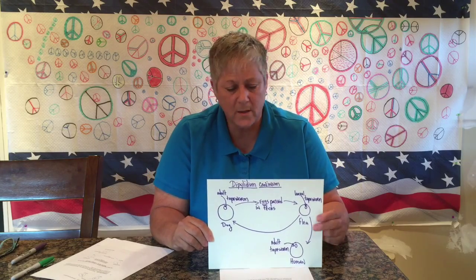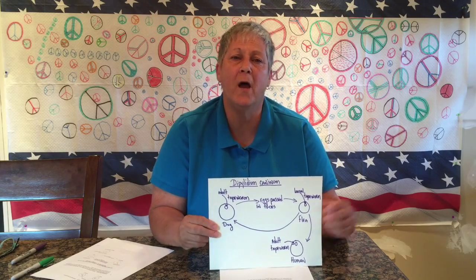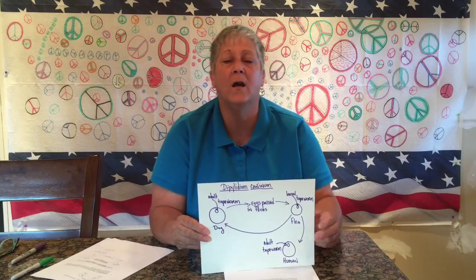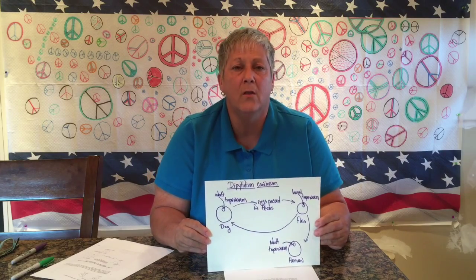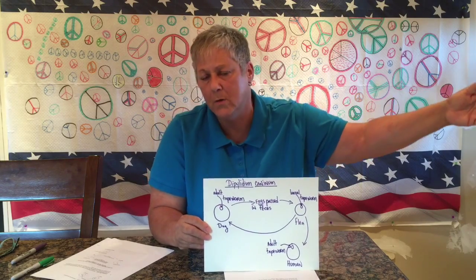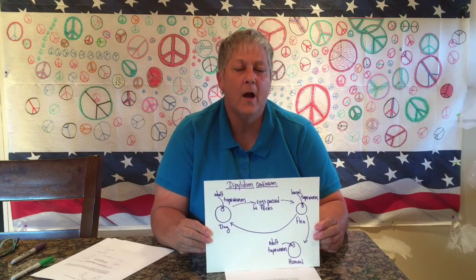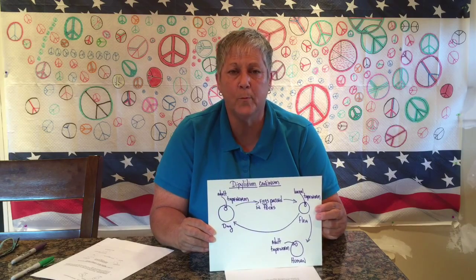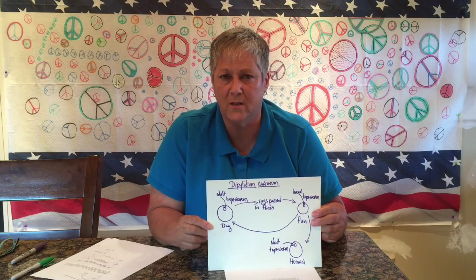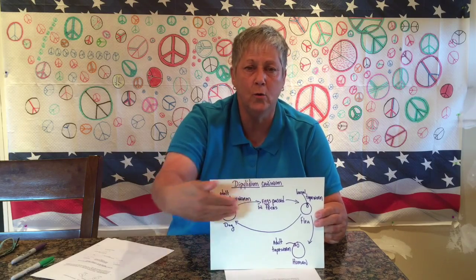The infected flea, as fleas do, bites the dog. The dog bites itself to scratch and in the process swallows and ingests the infected flea. Now let's say that flea moves from this dog to another uninfected dog — the flea has the larval tapeworm in it, flea bites dog, dog bites flea, dog becomes infected. The dog provides a developmental stimulus that allows the larval tapeworm to develop into the adult tapeworm. That's the usual life cycle.